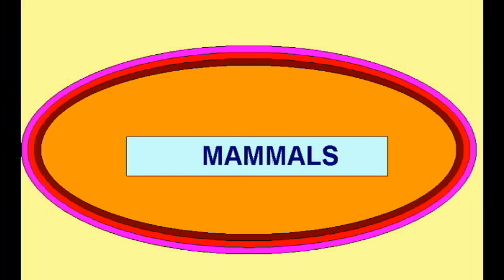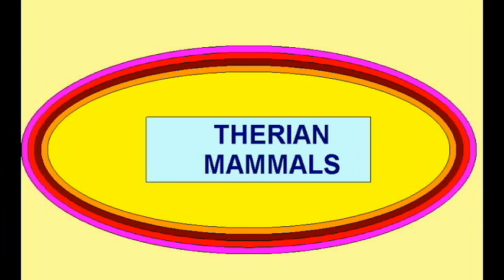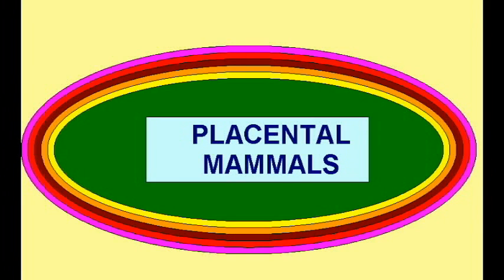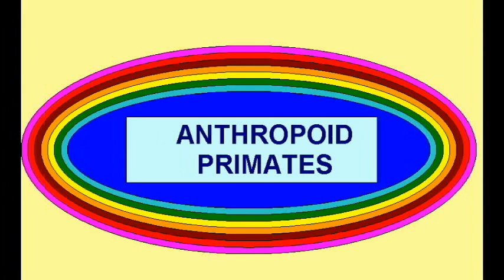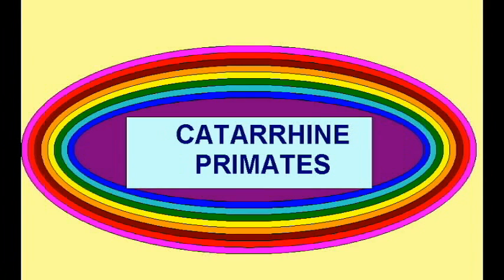Some amniotes developed hair and the ability to produce milk for their young, and are known as mammals. Some mammals developed live birth, and are known as therian mammals. Some therians gave birth to their young in an advanced state, and are known as placental mammals. A group of placentals adapted for life in the trees, and are known as primates. One group of primates advanced their nervous and muscular systems, and are known as anthropoid primates. One group of anthropoids developed color vision and other advances of the nervous system, and are known as catarine primates.